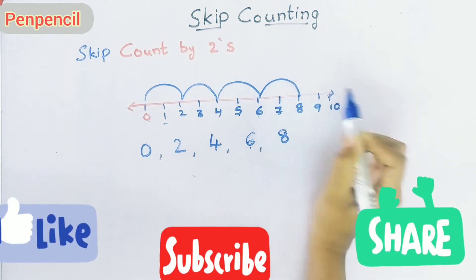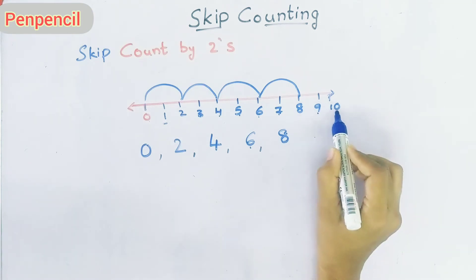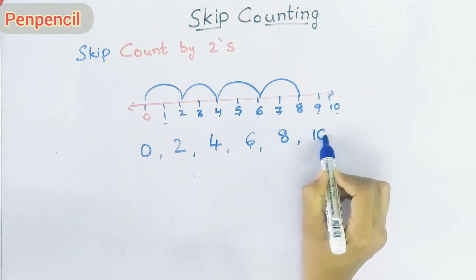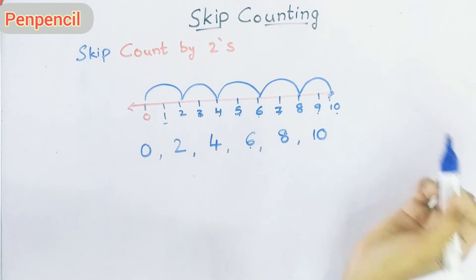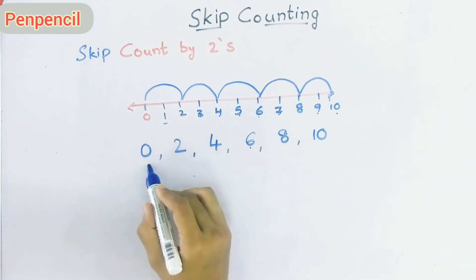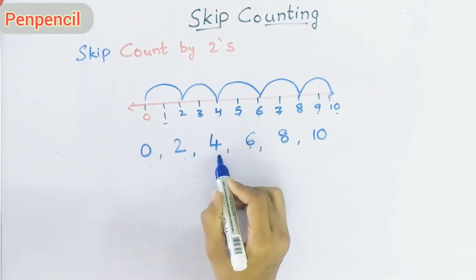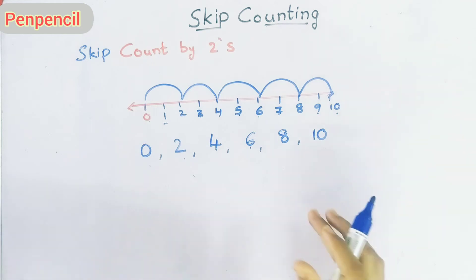After six, skip one two — next number is eight. Again one two — next number is ten. So this is how we do skip counting: 0, 2, 4, 6, 8, 10. Now we will do a worksheet related to skip counting by twos.